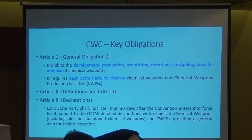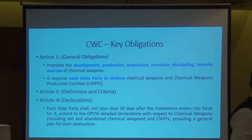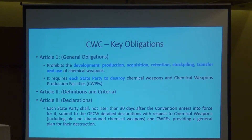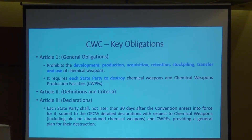Article 2 covers definitions used in the convention. Article 3 talks about declarations, under which each state party shall, not later than 30 days after the convention enters into force for it, submit to the OPCW a detailed declaration with respect to chemical weapons — including old and abandoned chemical weapons — and chemical weapons production facilities, providing a general plan for their destruction as well.